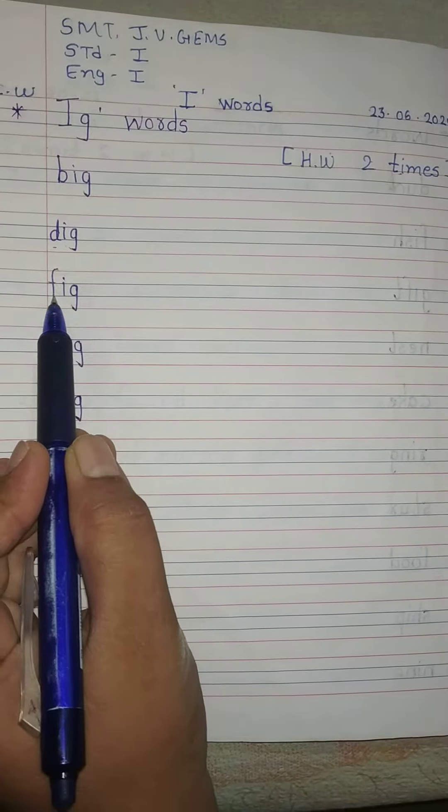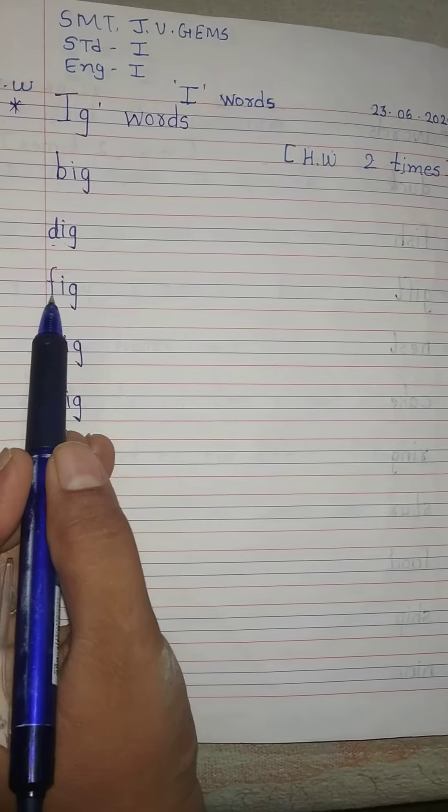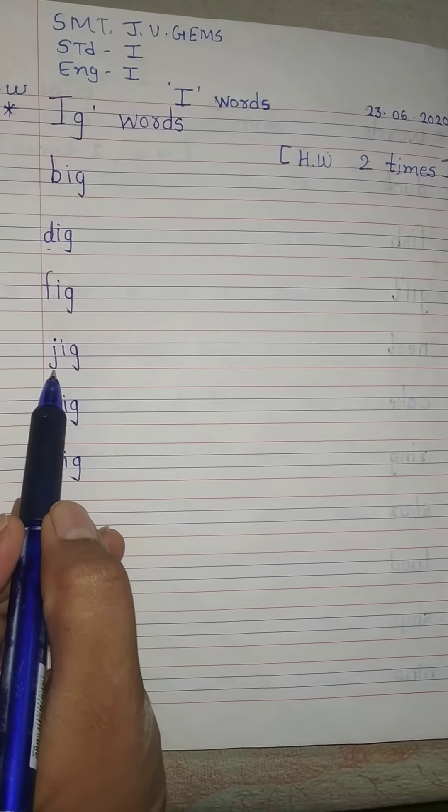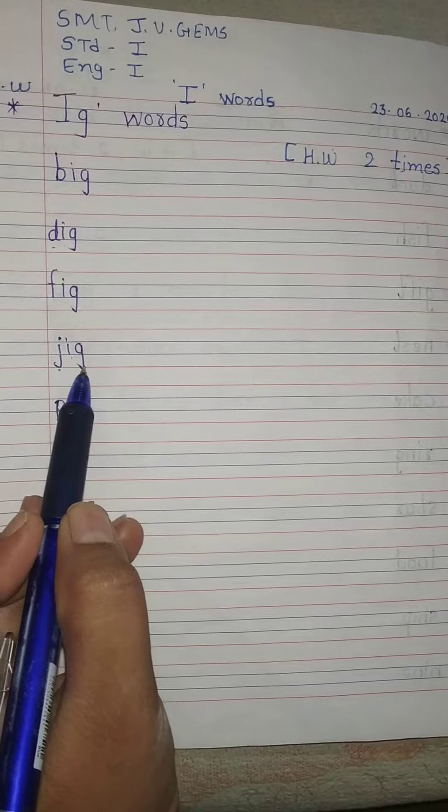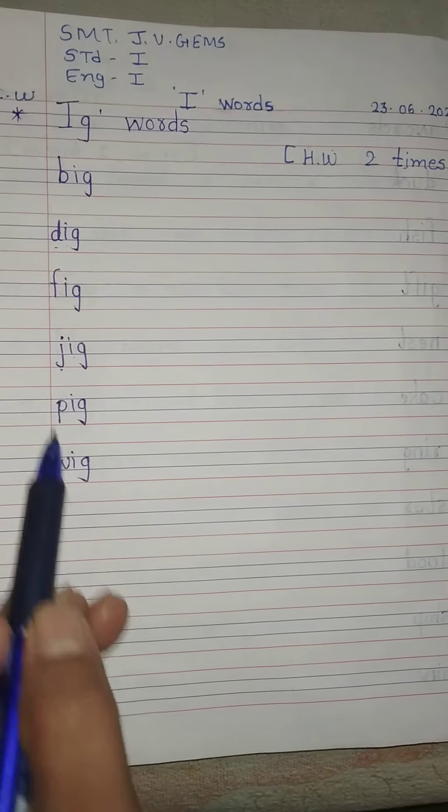F says F. F. Ig. fig. F.I.G. fig. J says J. J. Ig. jig. J.I.G. jig.